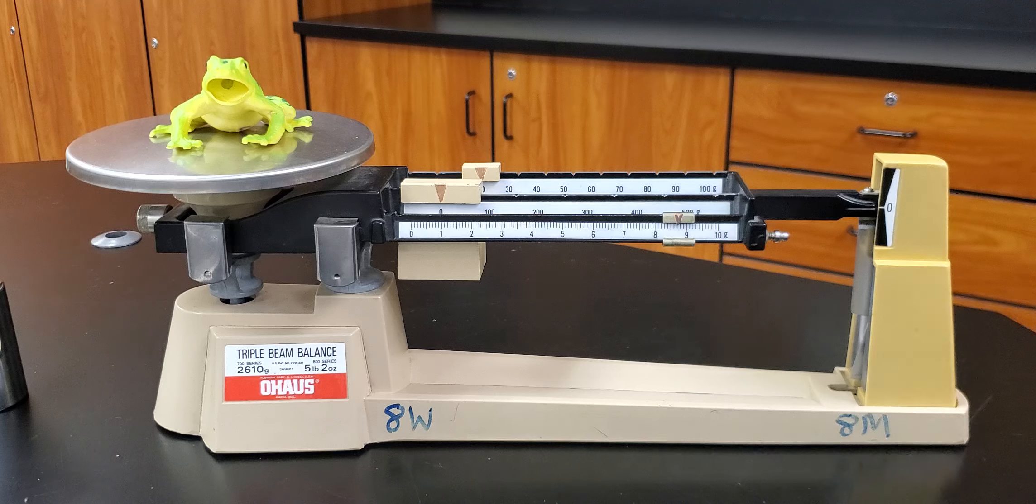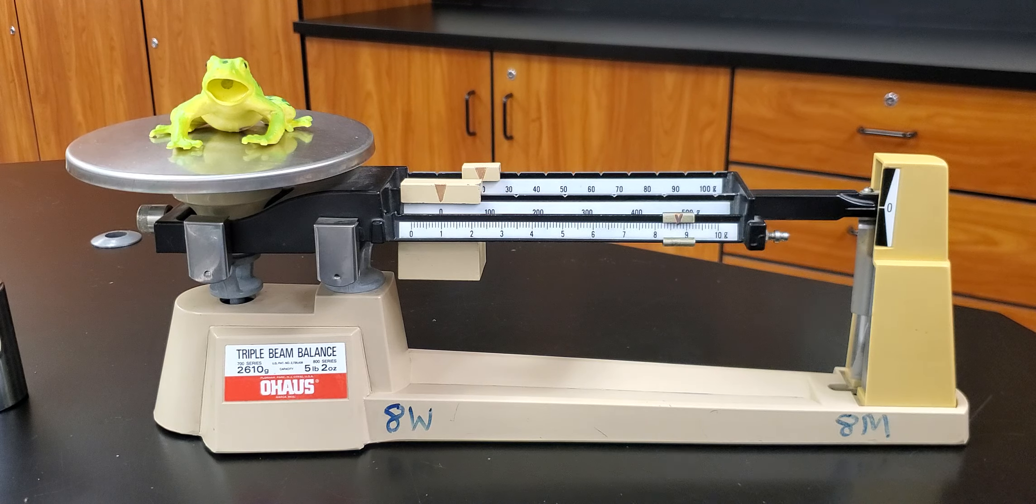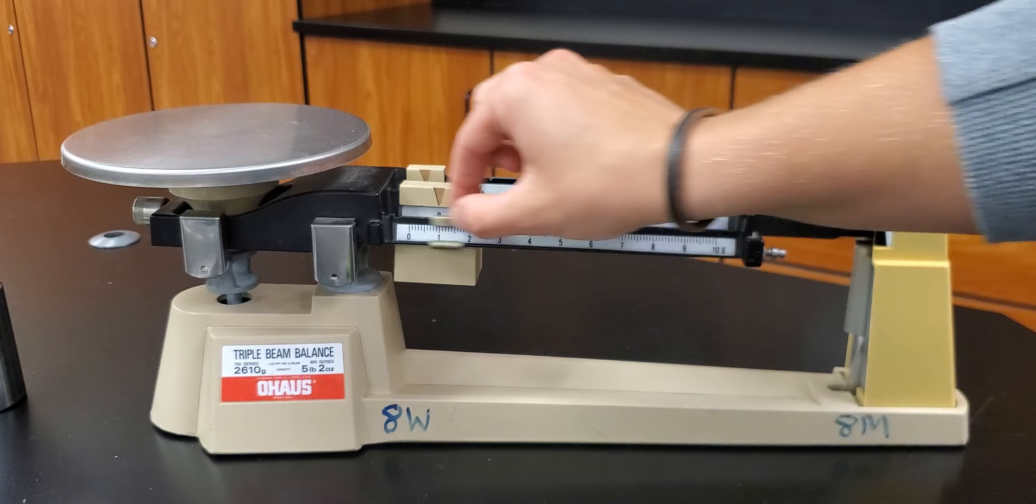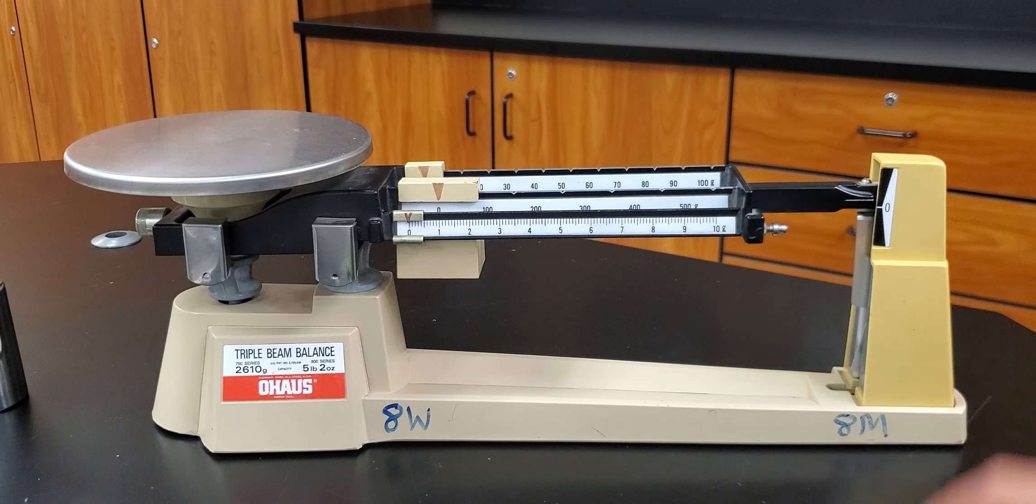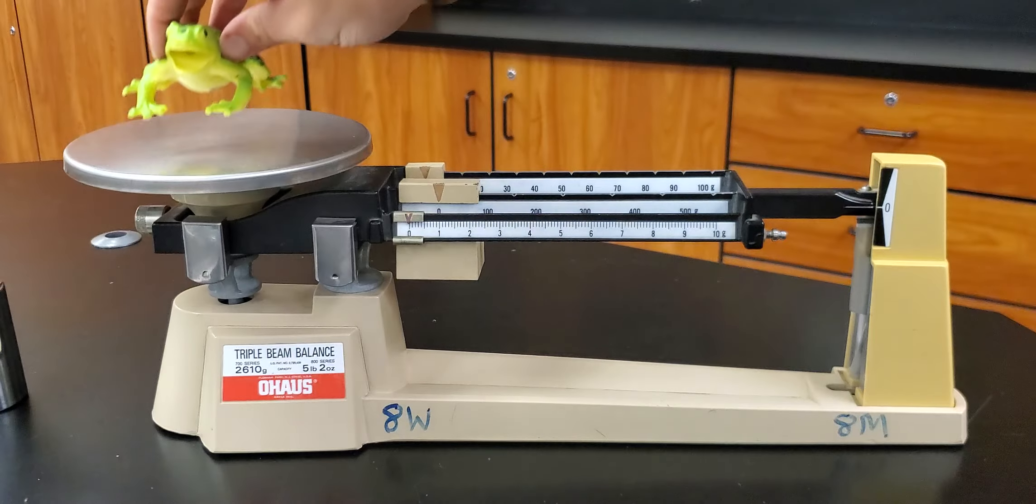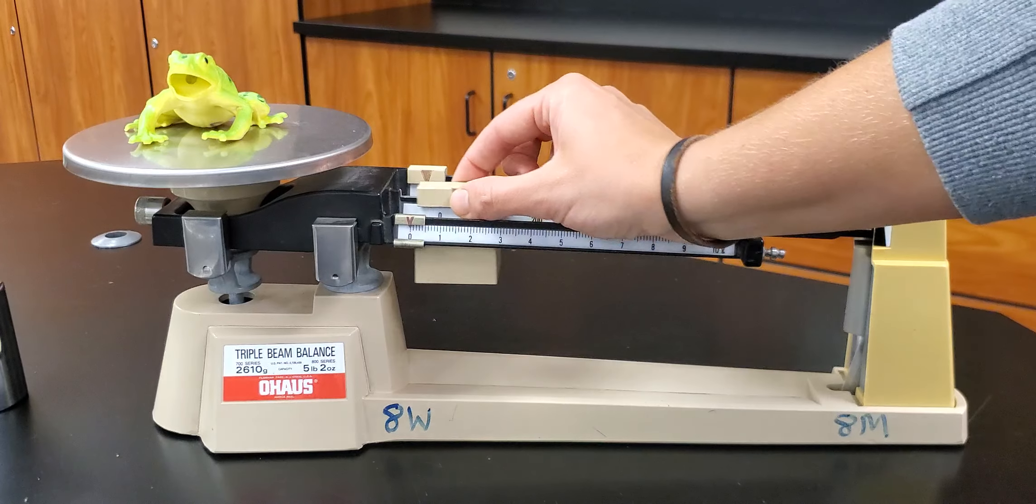Okay, so there's your super quick crash course on how to use a triple beam balance. Important things are making sure that things balance out properly at zeros before you start measuring. And then as you're measuring your object, make sure you're measuring from the heaviest weight, clicking it into the groove first, and then your next heaviest weight,